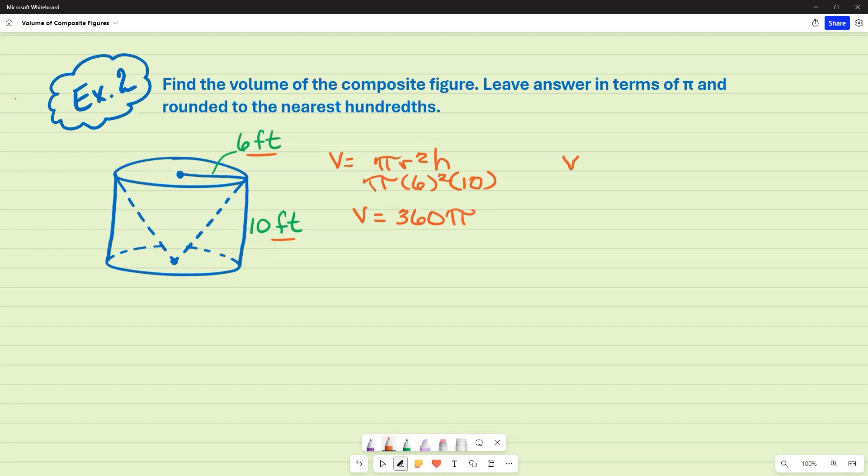So now I'm going to go to my volume of a cone, which is very similar. The only difference is I have to divide it by three. So one third of pi r squared times height, and I'm going to use the same information. R is still 6, and I'm still going to square it. My height is still 10.